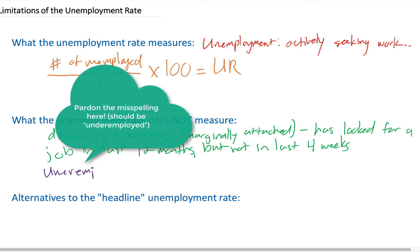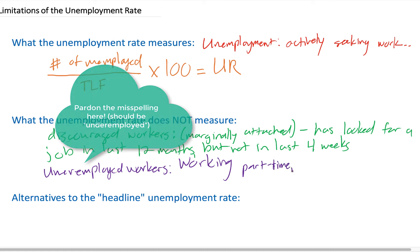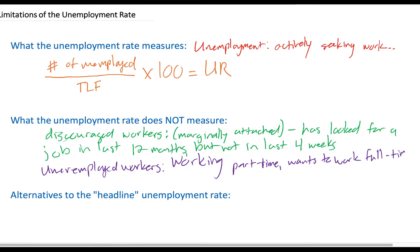Another category of workers not measured by the unemployment rate are what we call underemployed workers. Somebody who is underemployed is somebody who is working part-time but wishes they were working full-time. Consider somebody who just got a job at a retail store for 20 hours per week — this person may wish they were working 40 hours. However, according to the government, such an individual is not considered unemployed, and the official unemployment figure does not represent their situation very well.